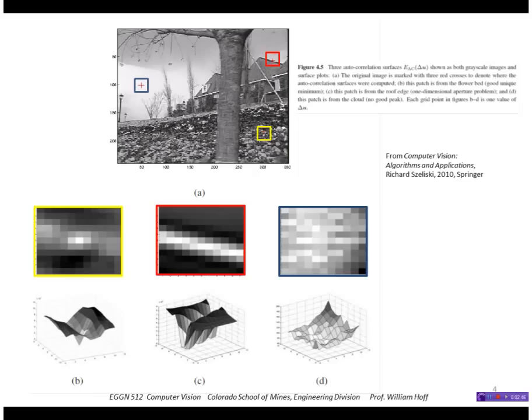Here's an example of some patches from an image where we compute this score, this autocorrelation score or sum of square differences score with itself. This patch in the sky is featureless, as you can see here, and it leads to a surface that doesn't really have a distinct minimum. This patch has a lot of nice texture and it leads to a strong minimum in the score. This patch is distinct in this direction but not in this direction, so we can see that the score doesn't have a distinct minimum along that direction.